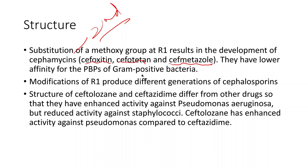Modification of R1 produces different generations of cephalosporins. You will be learning about ceftolozane and ceftazidime — they have very good activity against Pseudomonas. More than ceftazidime, ceftolozane has very good anti-pseudomonal activity. Ceftolozane is a fifth-generation cephalosporin and ceftazidime is a third-generation cephalosporin. Remember, anti-pseudomonal cephalosporins are very important to know.